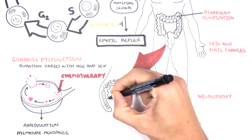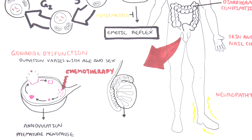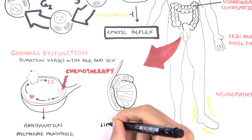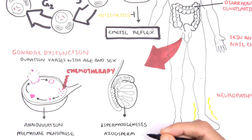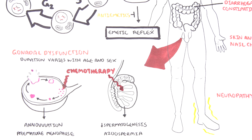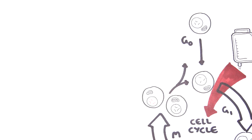In males, the testes is the site where spermatogenesis occurs. Chemotherapy agents can target spermatogenesis and decrease it, because spermatogenesis has a high turnover — males produce sperm every day. Long-term and very rarely, chemotherapy agents can stop sperm production altogether.